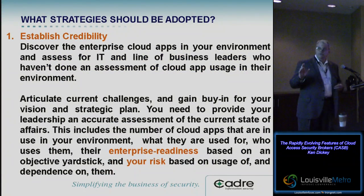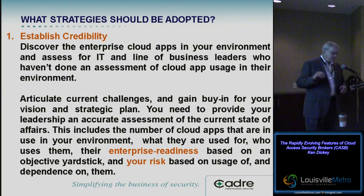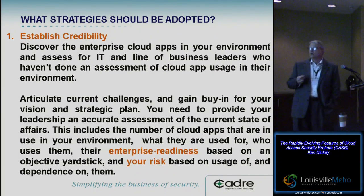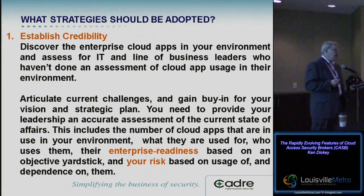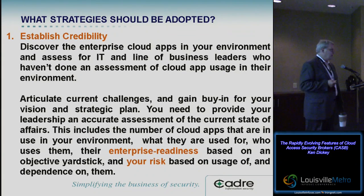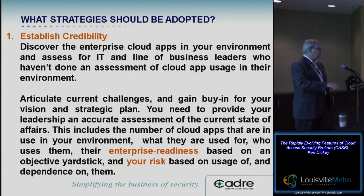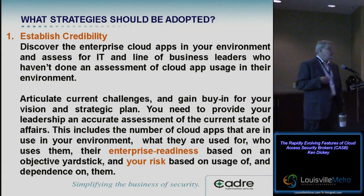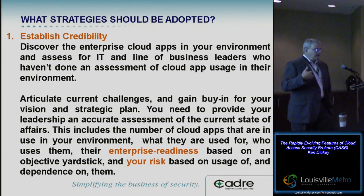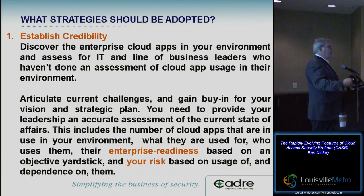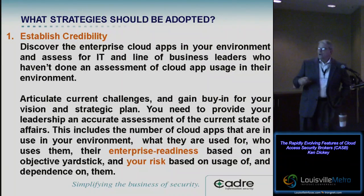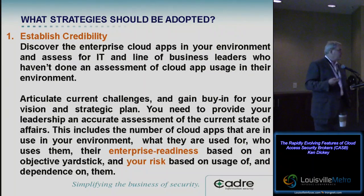I want to get through these five strategies you should adopt in order to bring SaaS apps under control. The first is you have to have credibility with your peers. You have to have a discovery process that allows you to quantify exactly what is happening within your organization — not only with users within the perimeter, but your remote workforce. You have to be able to articulate the challenges and gain buy-in, and it will give you credibility with line-of-business owners and C-level executives.